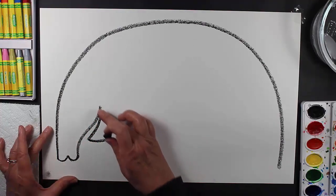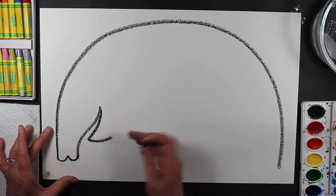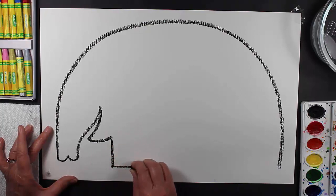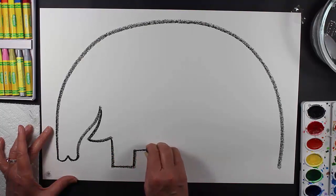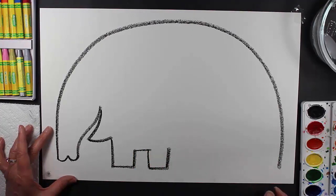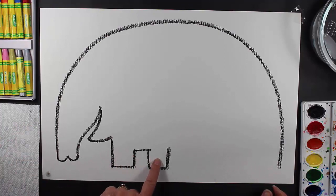Now I come down and then over, go up and then over, come down, over and up. These are going to be the two front feet of my elephant. Because this is a cartoon elephant, it's not realistic, we can make the feet however we want.